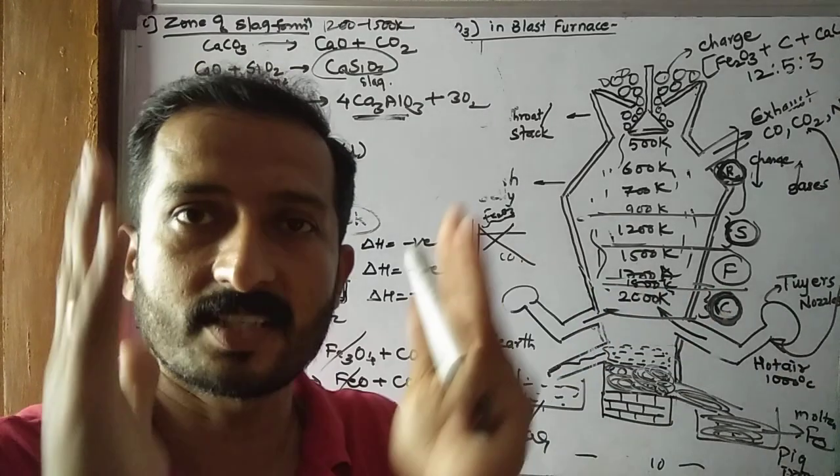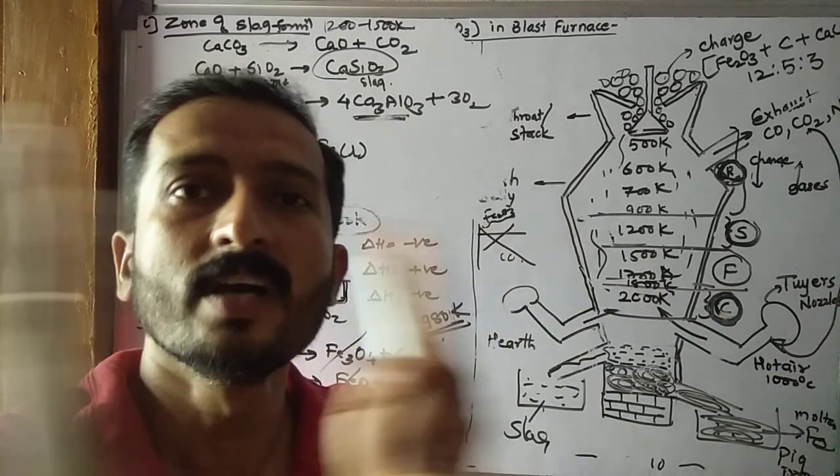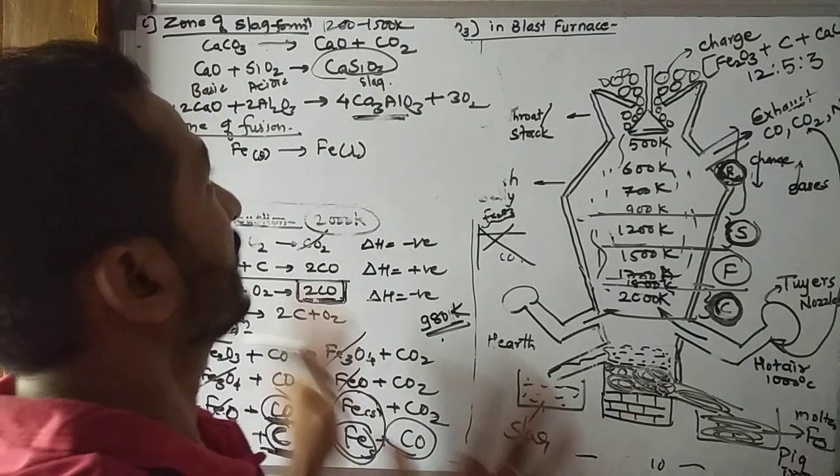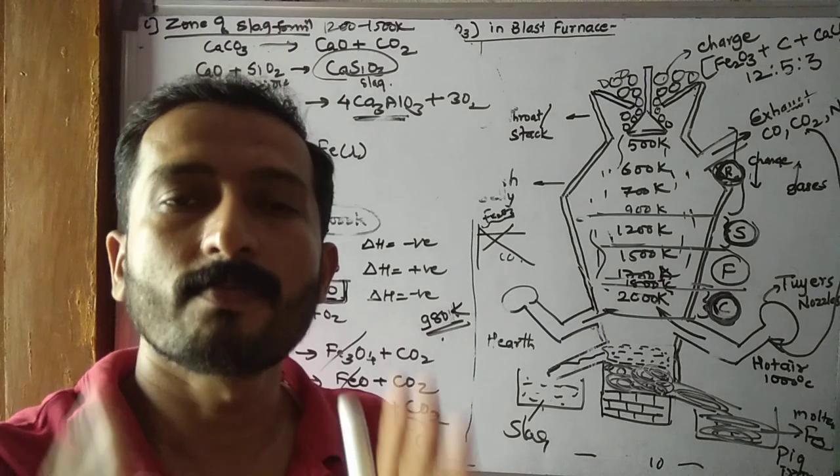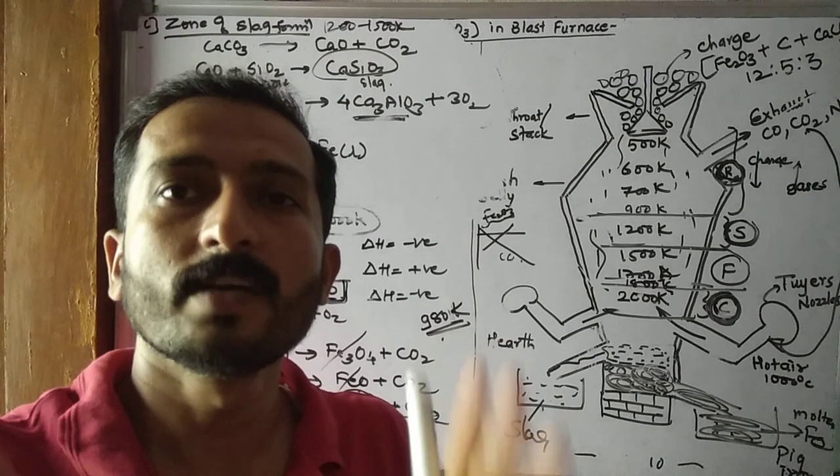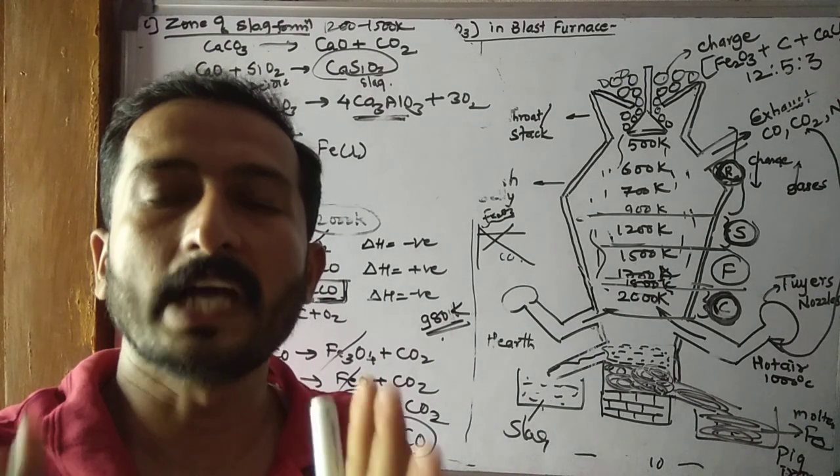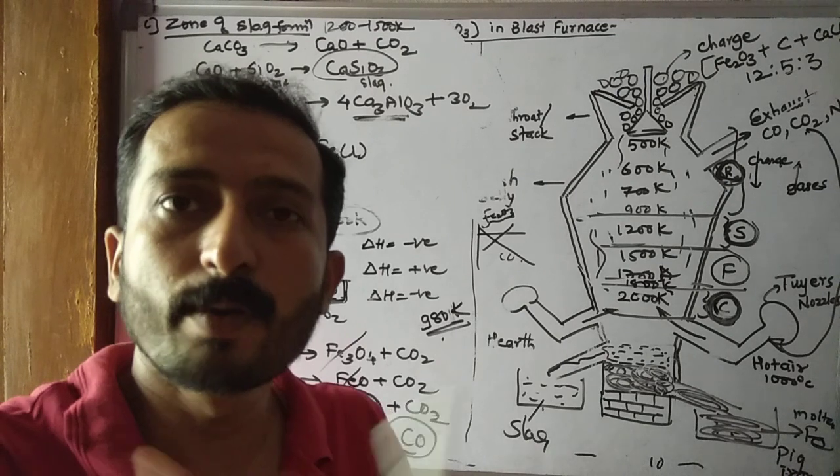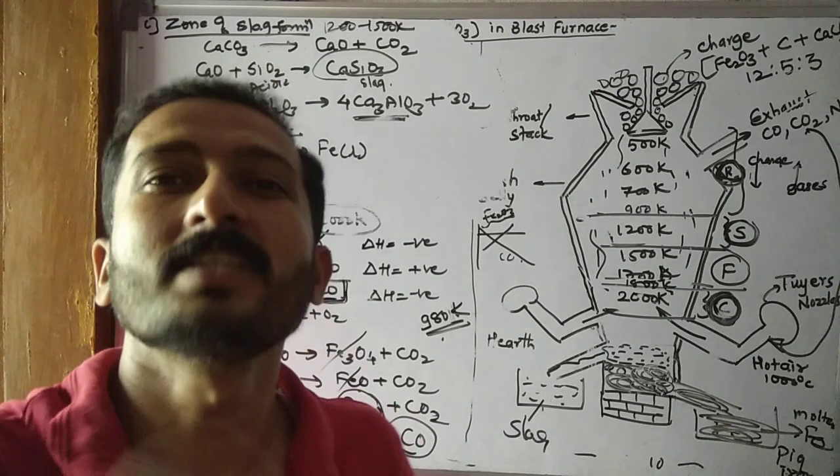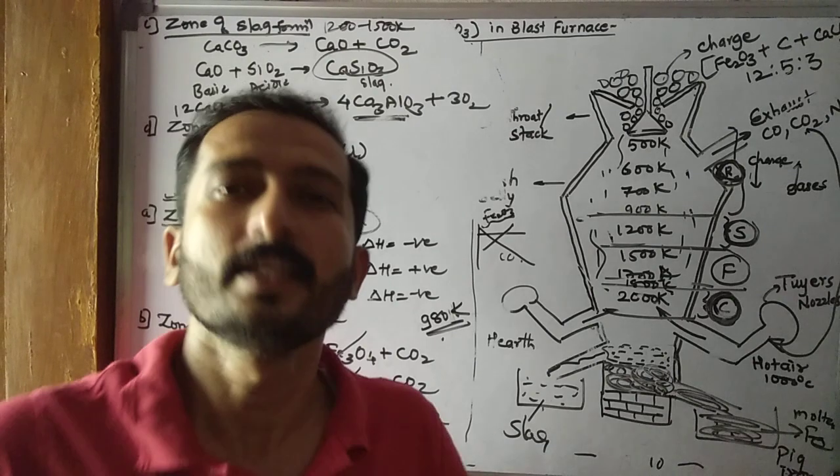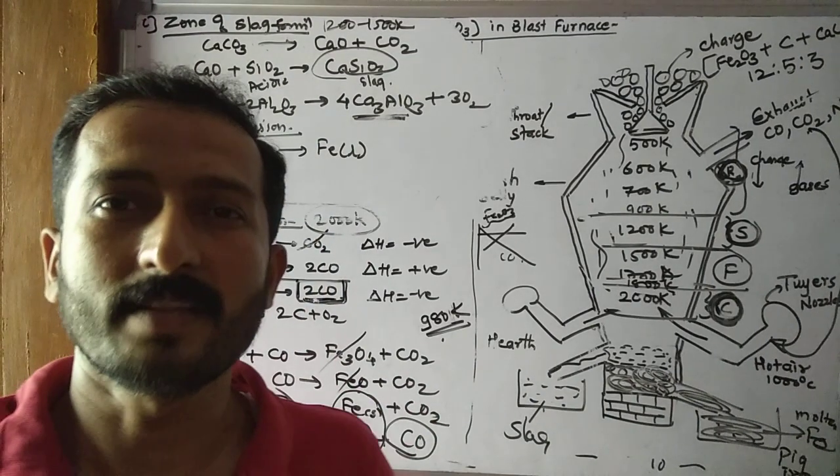We will see refining in detail in the refining section later. So thank you. This is the extraction of iron from hematite ore using blast furnace. This was the end of metallurgy. In the next video, we shall now start inner transition elements. Thank you.